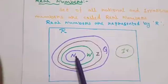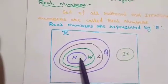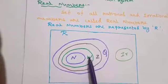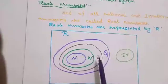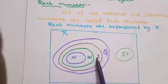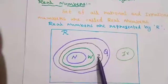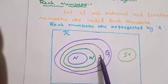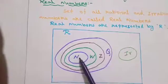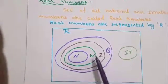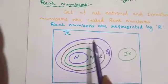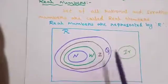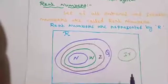Natural numbers are counting numbers: 1, 2, 3. Whole numbers include 0 and natural numbers. Integers include positive, negative, and zero. Rational numbers form one group containing natural numbers, whole numbers, and integers. Irrational numbers are opposite and different from rational numbers. Together, rational and irrational numbers form the real numbers.